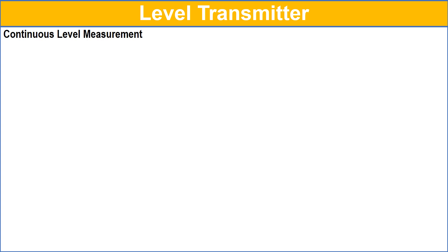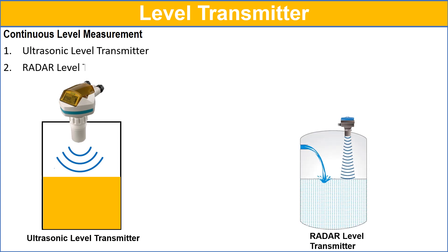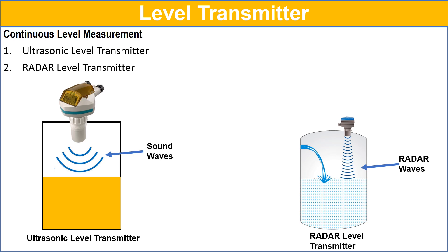In continuous level measurement, there are two types of level transmitters: ultrasonic level transmitter and radar level transmitter. Both transmitters work on the principle of transit time. The ultrasonic level transmitter uses ultrasonic sound waves to measure the level, while the radar level transmitter uses high-frequency radar waves to measure the level.